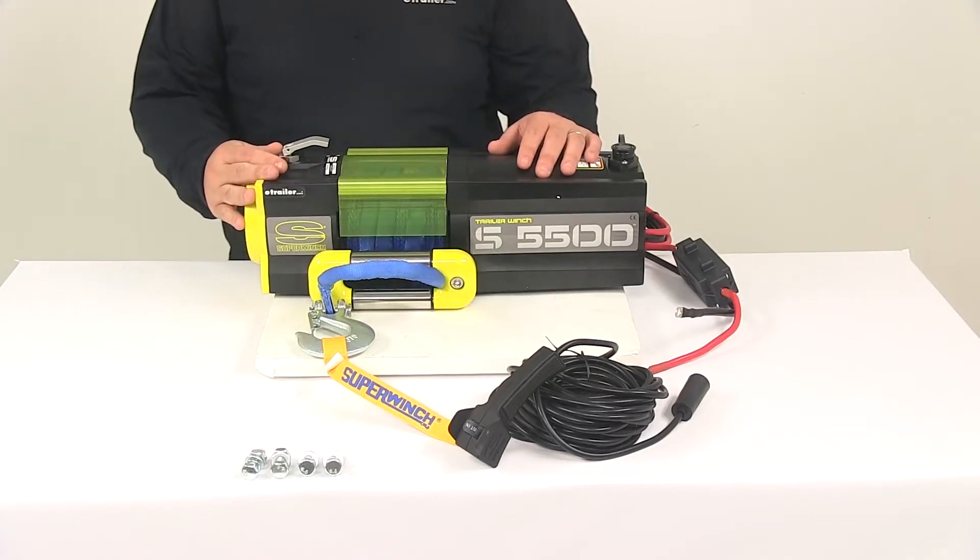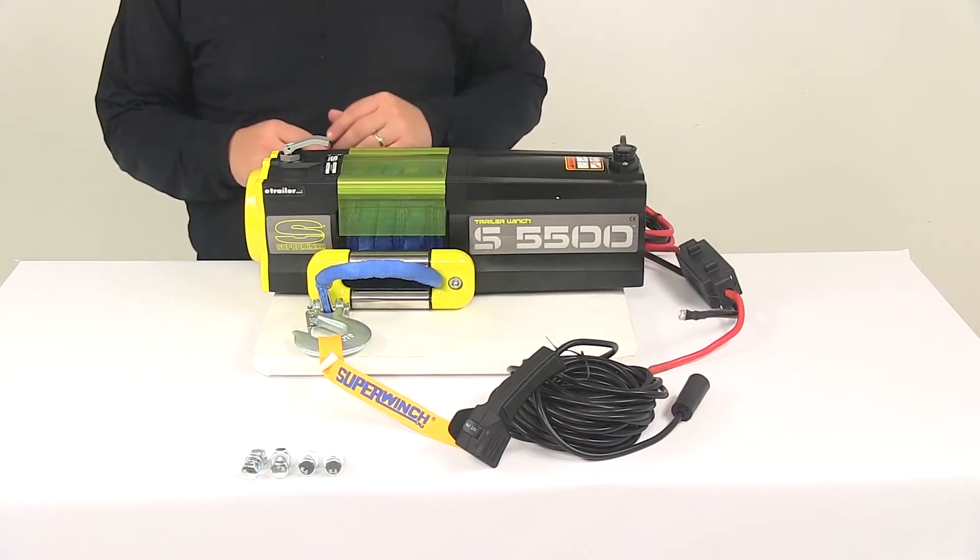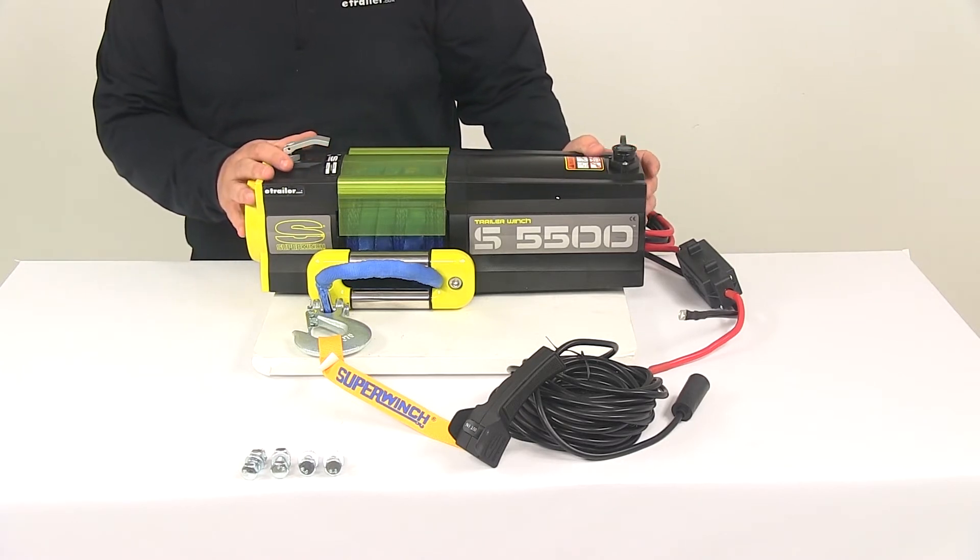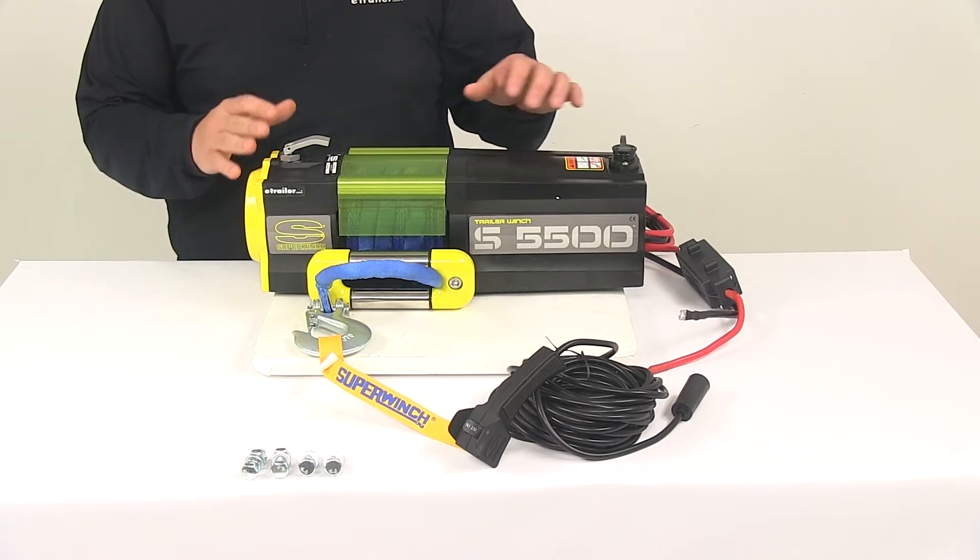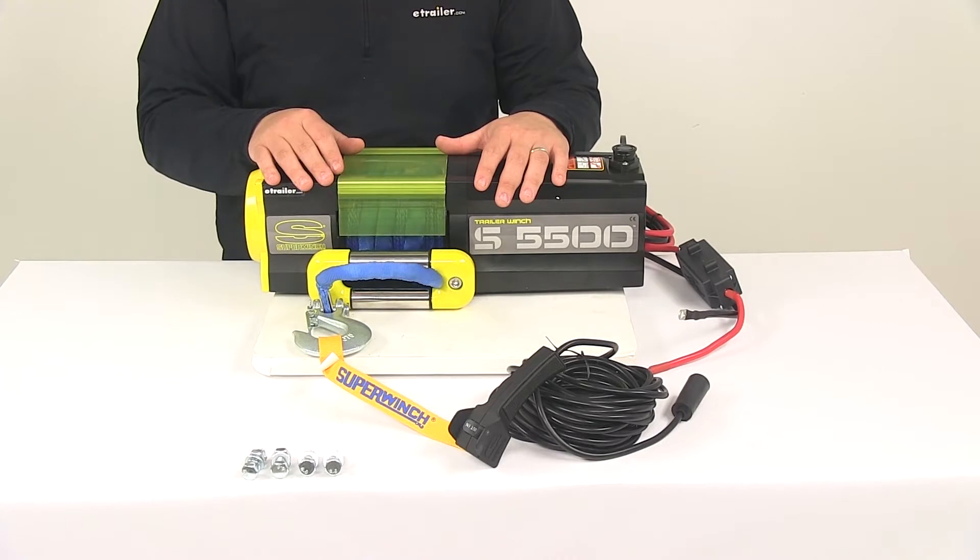Today we're going to be taking a look at the SuperWinch S5500 SR winch, a trailer winch that's able to pull 5500 pounds. It features a sealed 3.6 horsepower permanent magnet motor driven through an all-steel three-stage planetary gearbox.